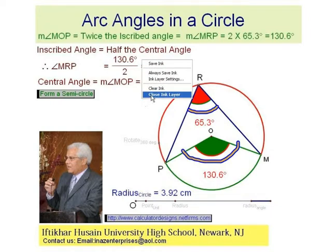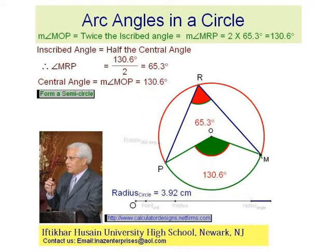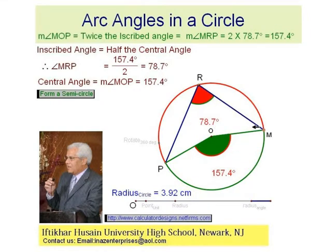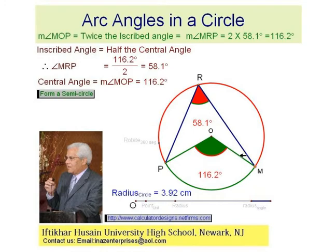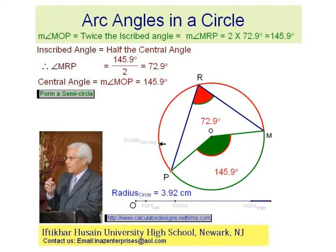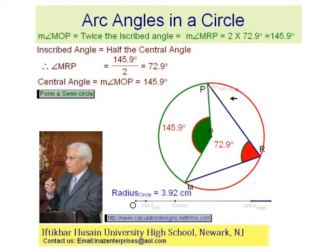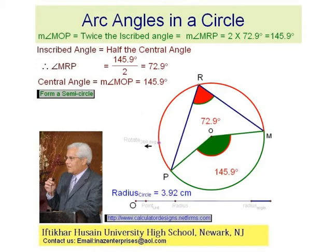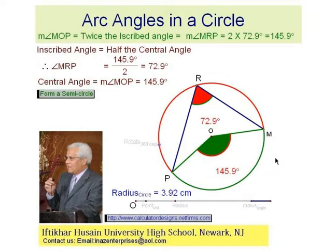Now I'm going to show you visually that this is true for all values. If I change the value of the central angle, you can see the measure of the inscribed angle is always half its value, whether this way or that way. Even if I rotate the circle either way, the central angle is always twice the value of its inscribed angle.